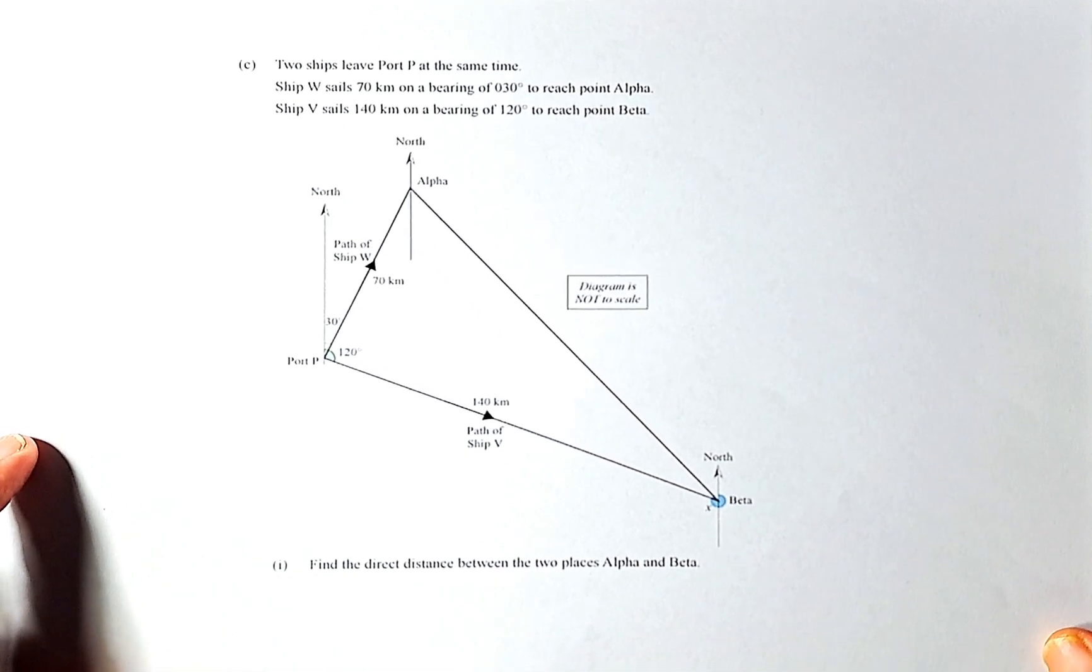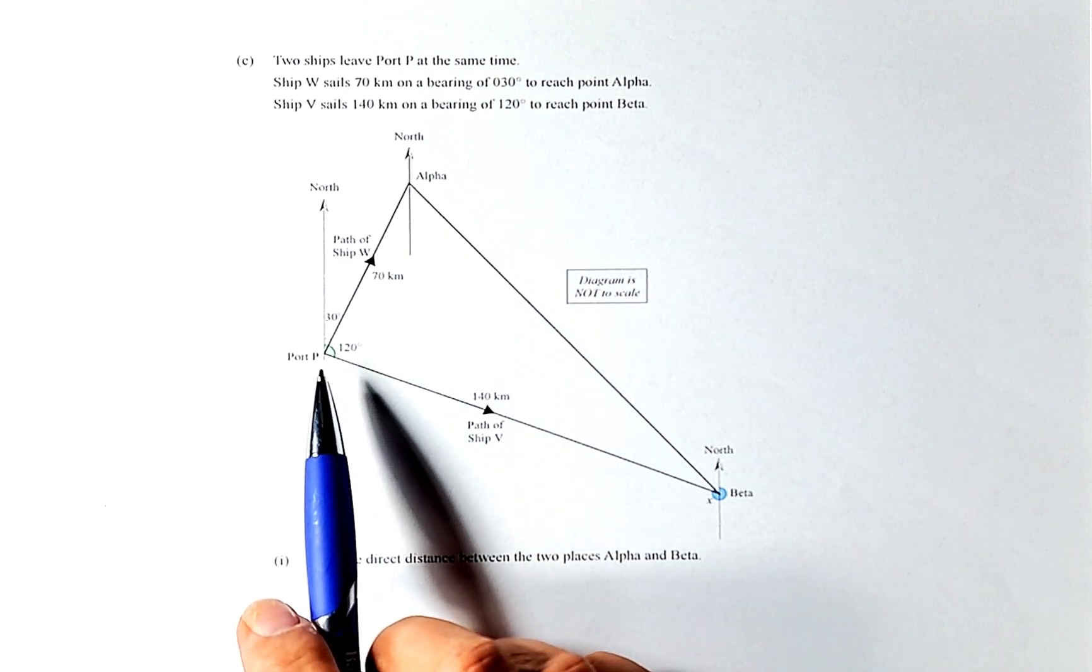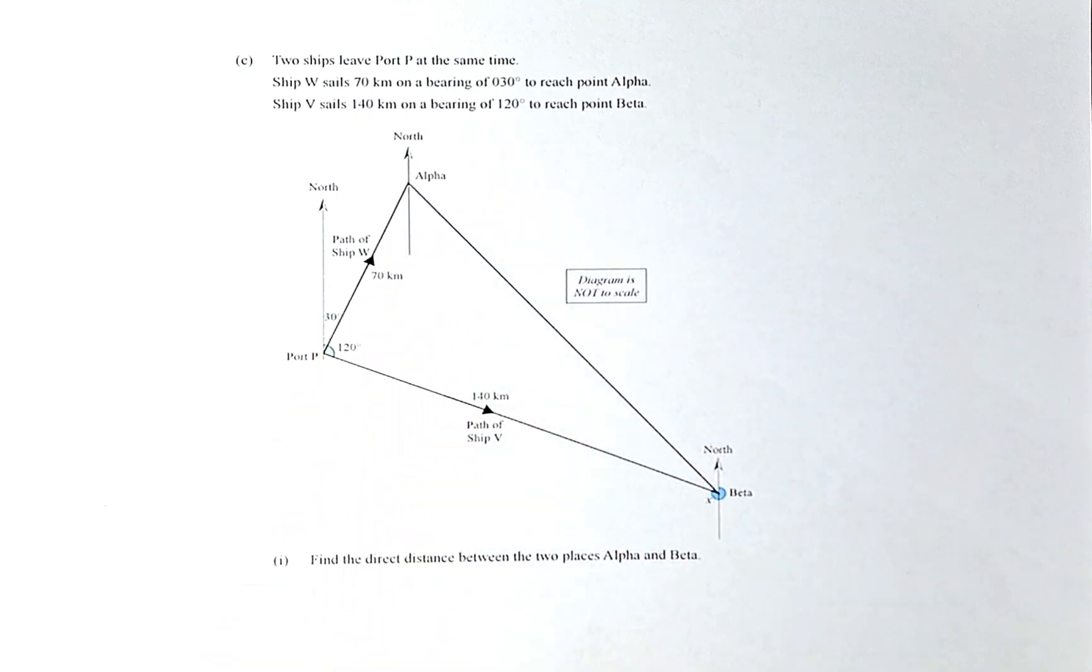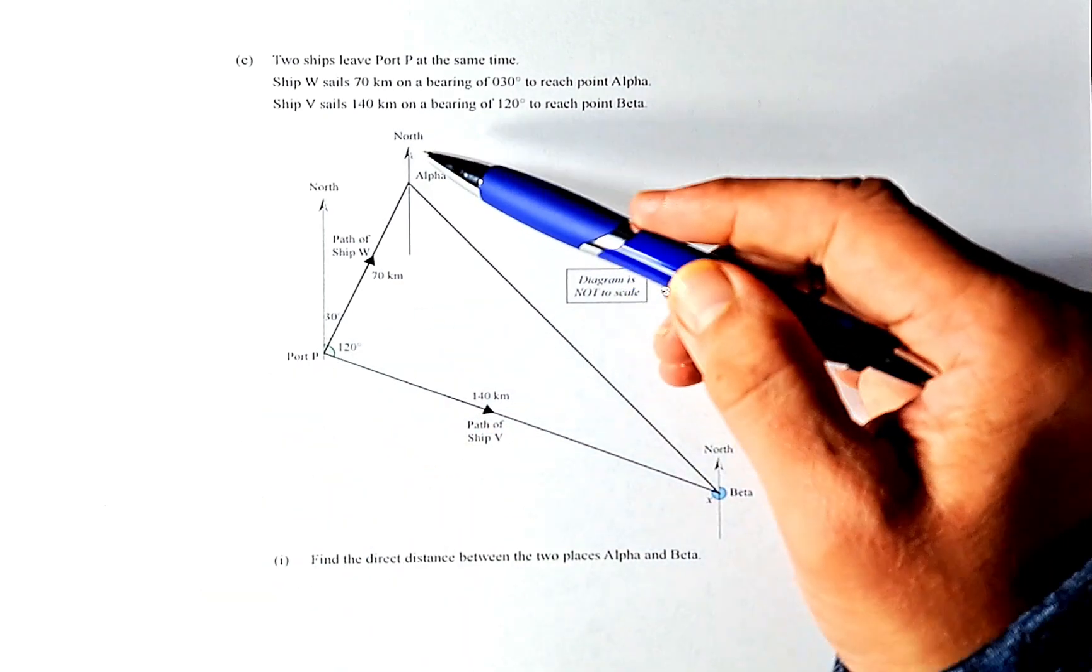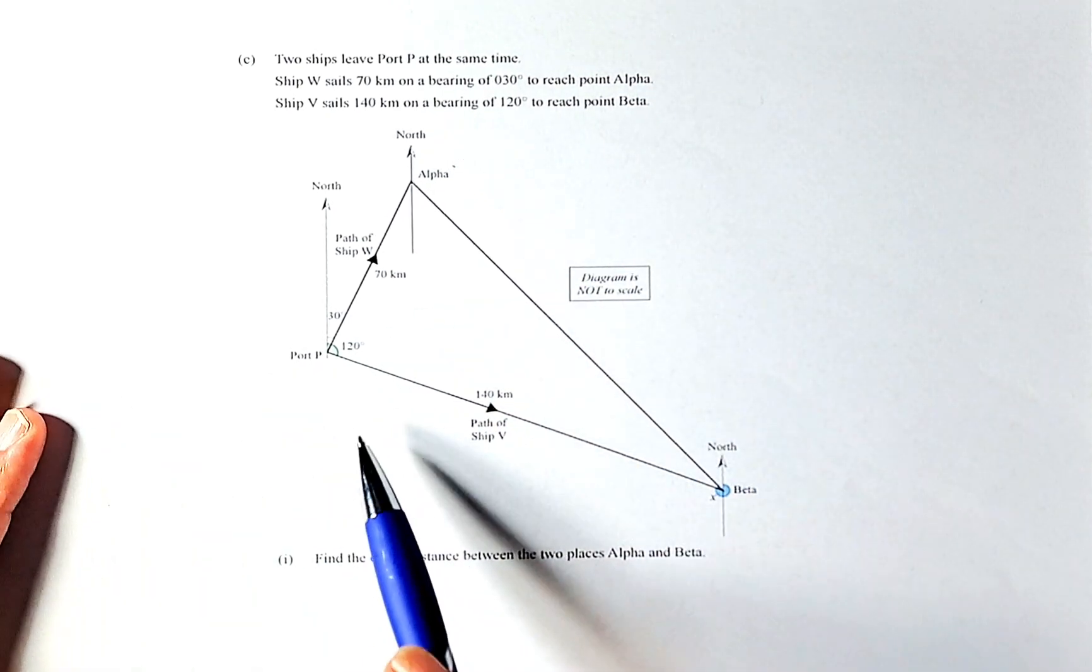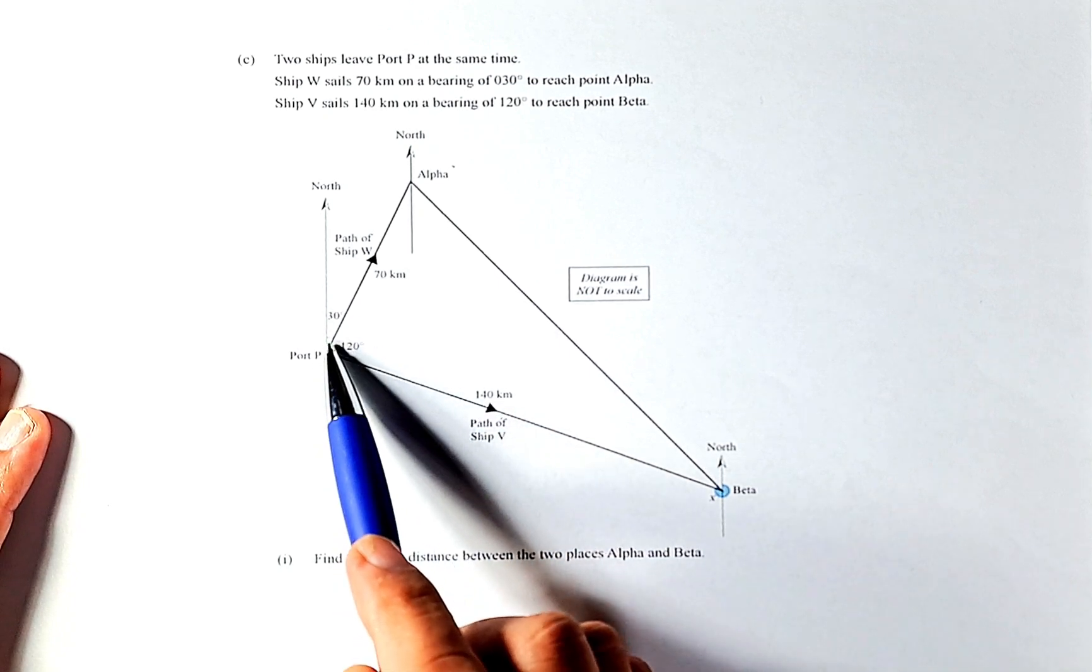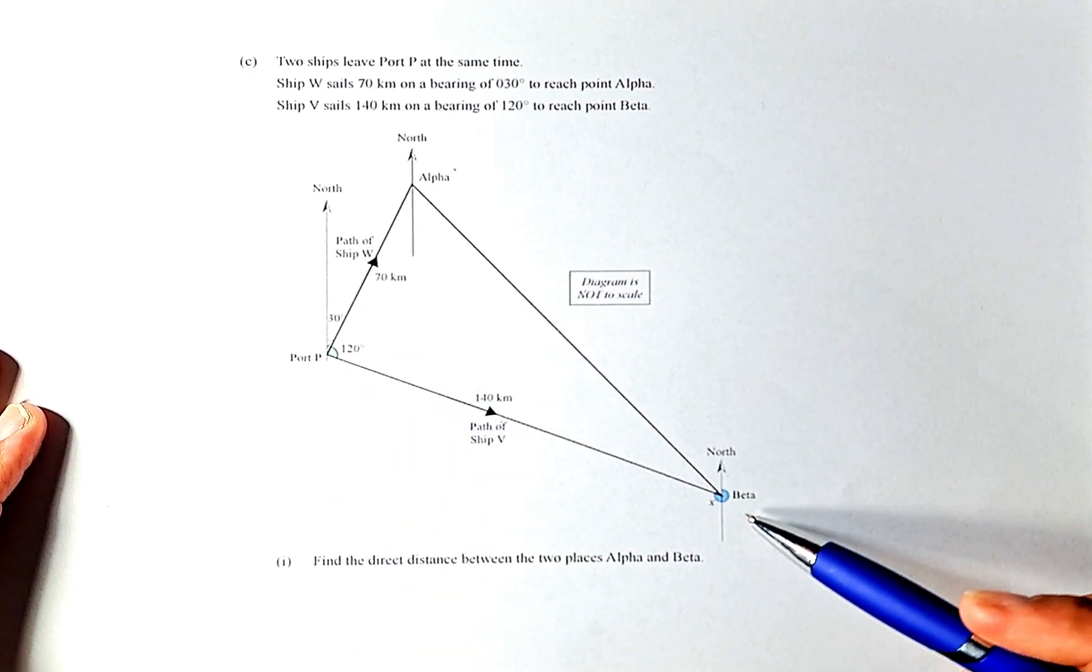This is the question and we shall read them together. Two ships leave port P at the same time. Ship W sails 70 kilometers on a bearing of 030 to reach alpha. Ship V travels 140 km on a bearing of 120 to the point beta.